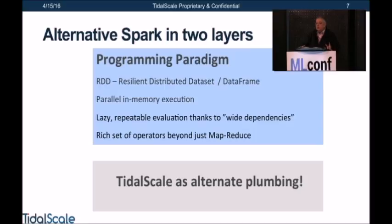The problem is the plumbing underneath. To do that plumbing requires a lot of very specific tools and techniques. Our alternative is the same programming paradigm, but we let TitleScale take care of all the plumbing by creating a layer of software that sits below the operating system. The operating systems we support include CentOS 6.5, 6.6, 6.7, Red Hat, FreeBSD, and Windows. We have to look like hardware, and we've been doing it for the last 18 months, passing the Linux test procedures at 100%.